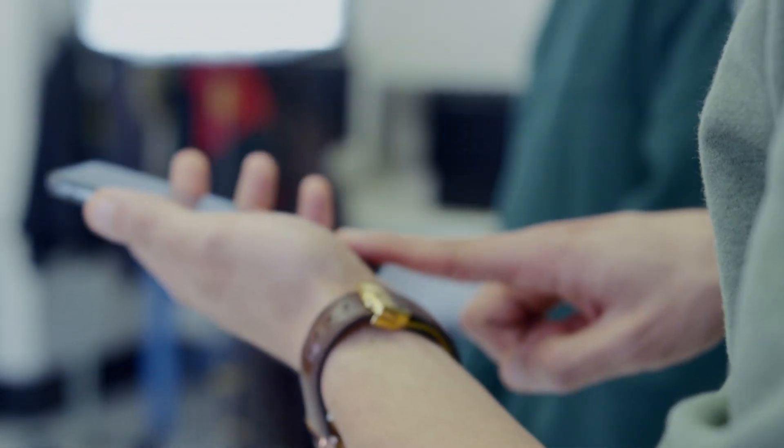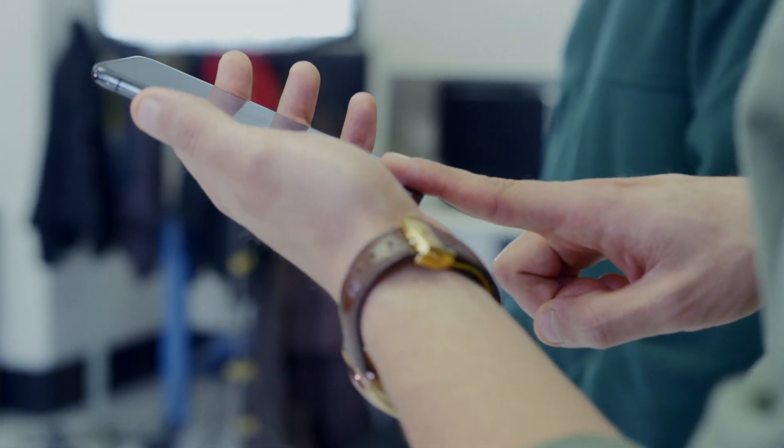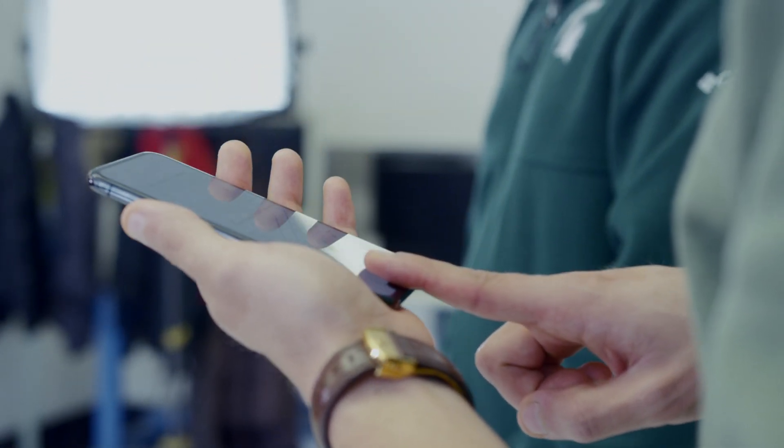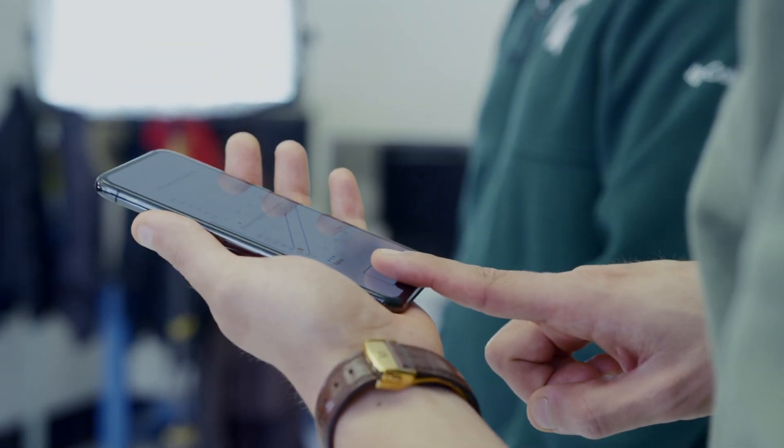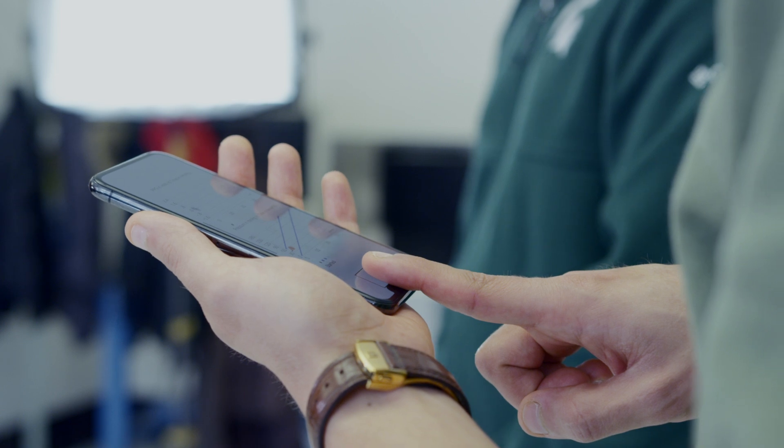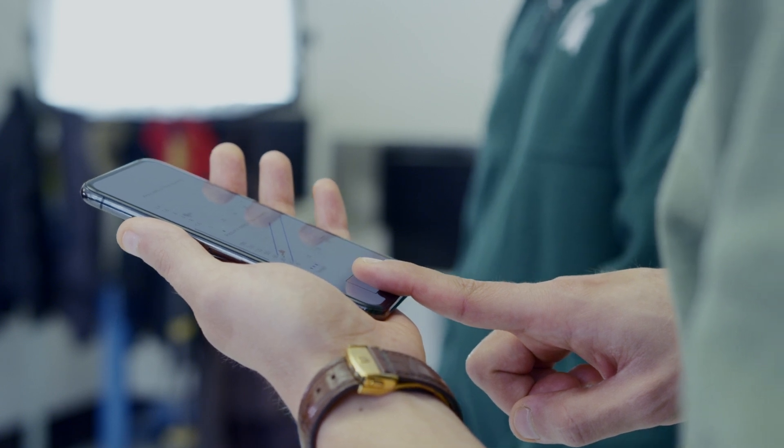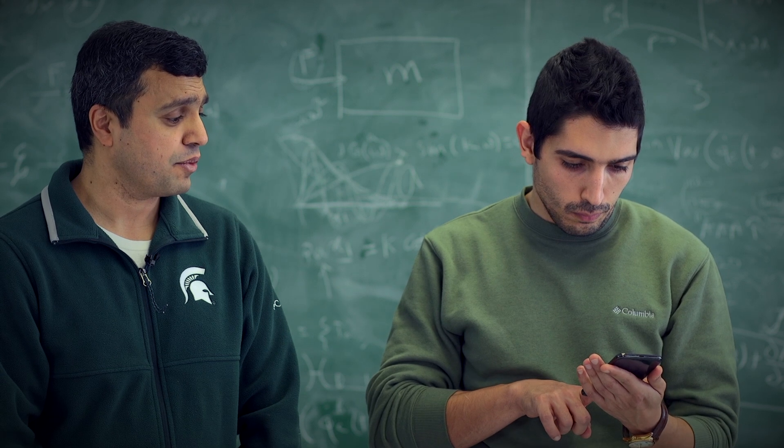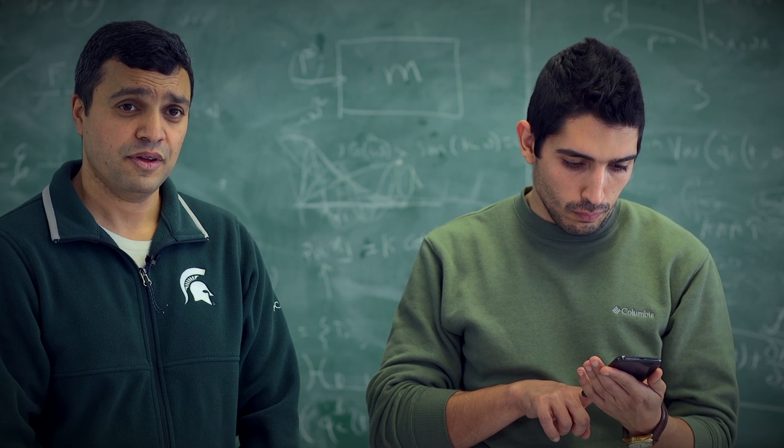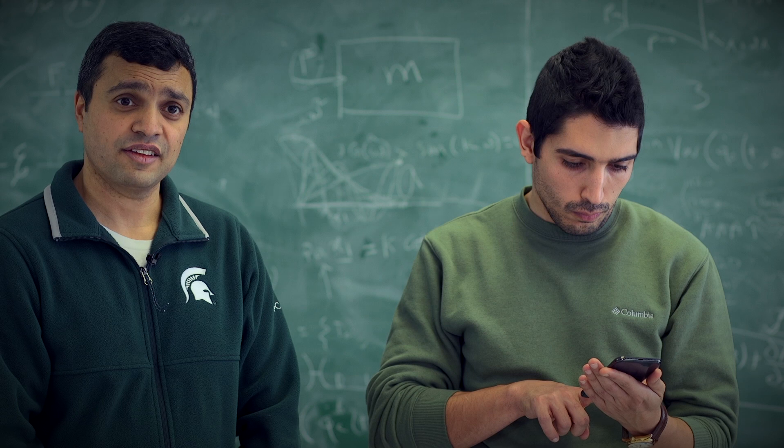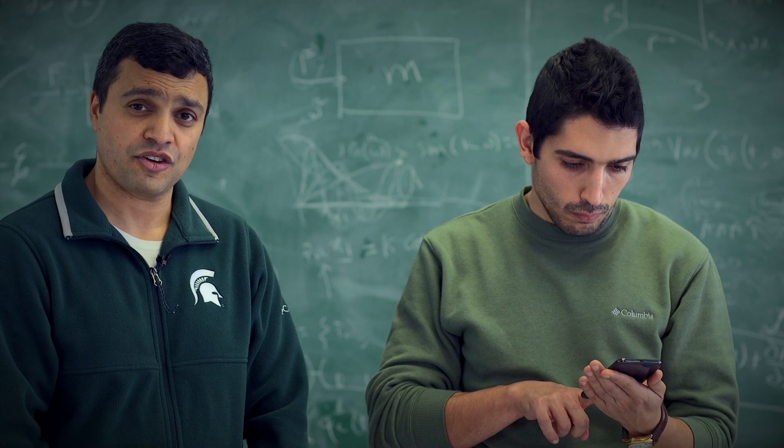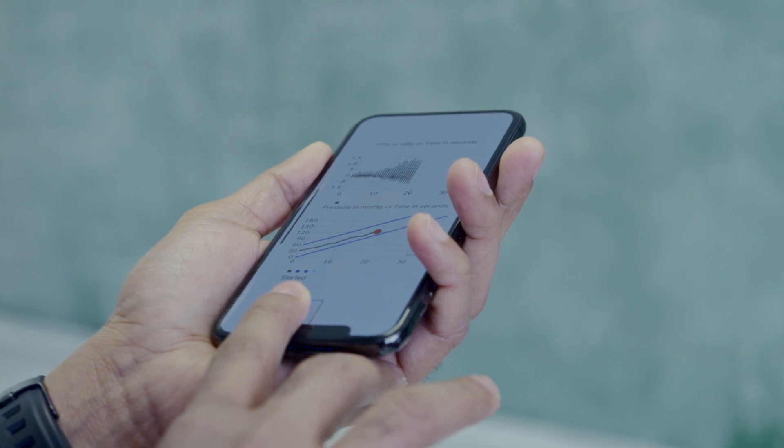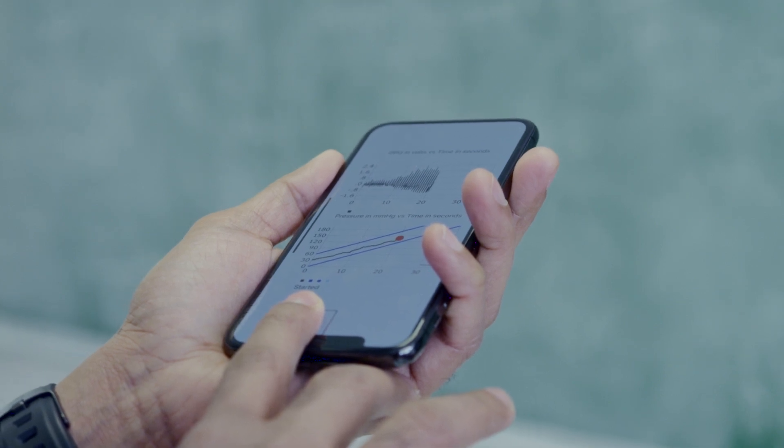So the user measures blood pressure in three similar steps. First the user places his fingertip according to this rectangular box on the screen and then the user holds the iPhone at heart level and then the user steadily presses his fingertip against the phone to likewise keep the cursor in between the blue lines and once enough data are measured the measurement will terminate and blood pressure will be outputted.